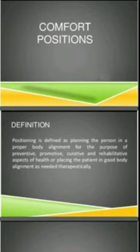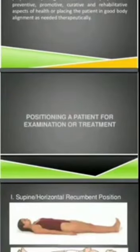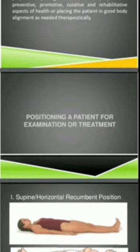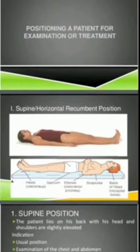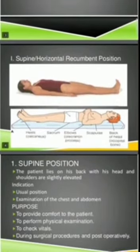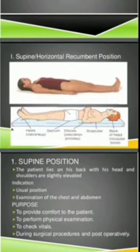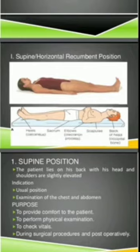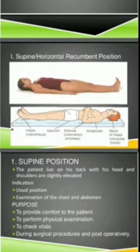Another purpose is positioning a patient for examination or treatment. There are different types of positions. The first is the supine or horizontal recumbent position, in which the patient lies on his back with head and shoulders slightly elevated. It is used for examination of the chest, body, and abdomen, to provide comfort, to perform physical examinations, check vital signs, and in surgical procedures and post-operatively.